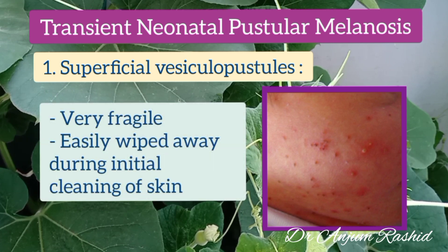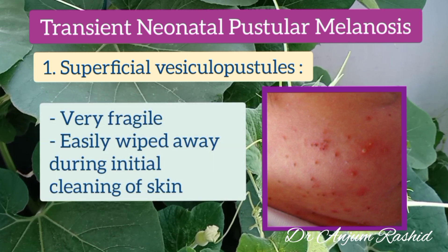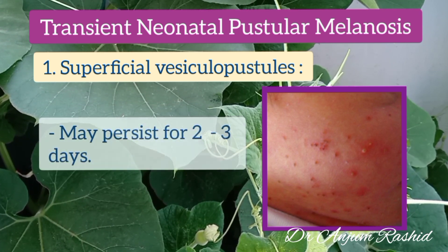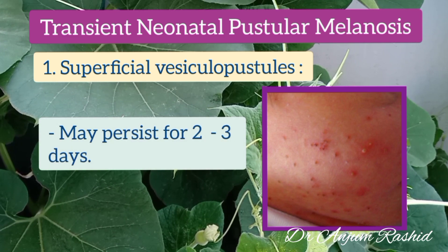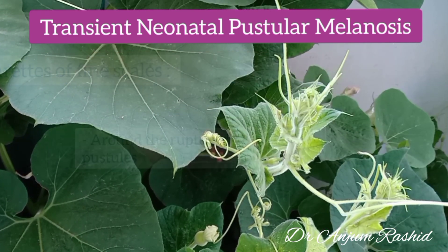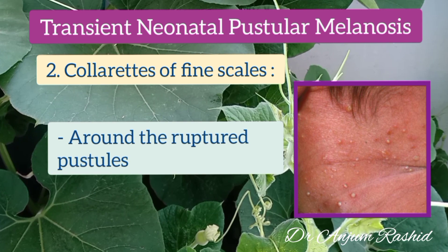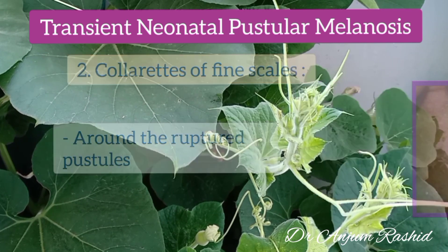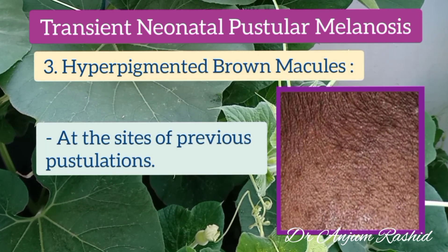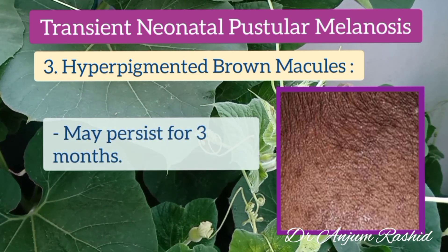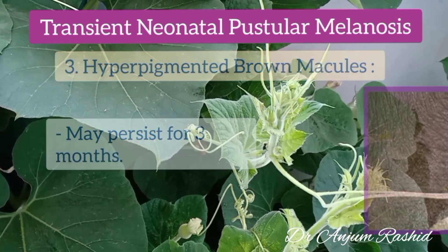Now they are very fragile, easily wiped away during initial cleaning of the skin. However, they may persist for about two to three days. The second phase is the collarette of fine scale around these ruptured pustules, and the third phase is the hyperpigmented brown macule at the site of previous pustulation, which may persist for about three months.